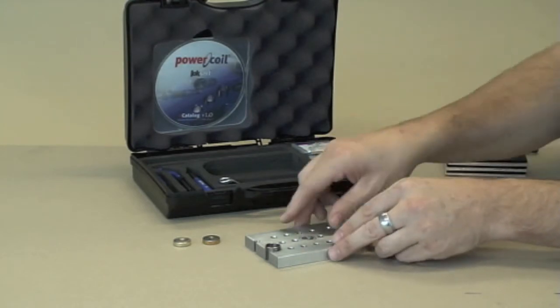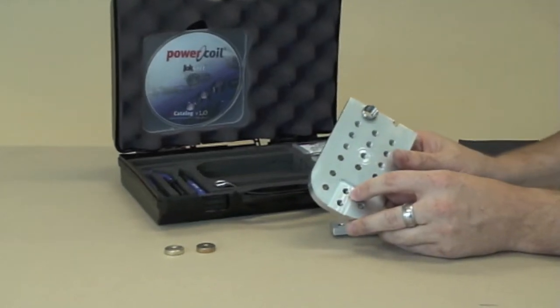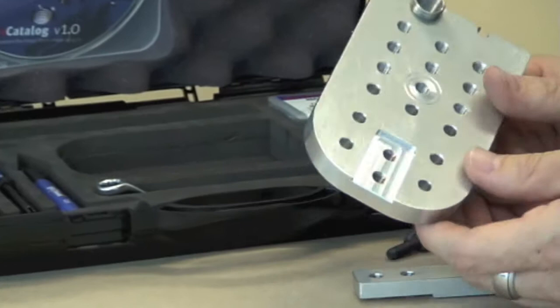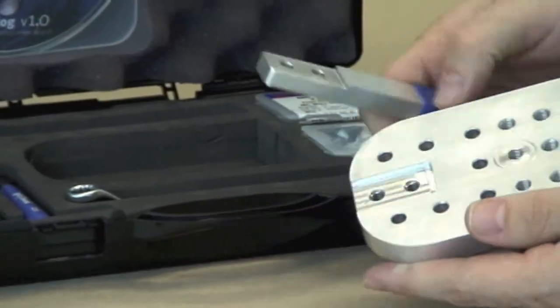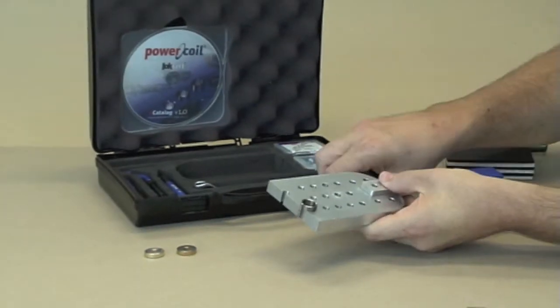What we've done with this paddle is these two holes have been pre-tapped out to wire thread insert size for M6, and then we've installed wire thread inserts in them. So we've incorporated the use of the product actually in the demonstration.